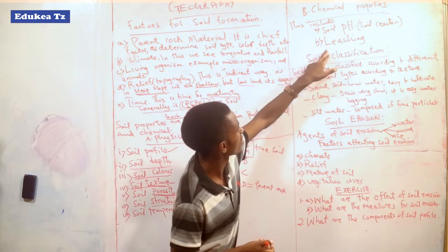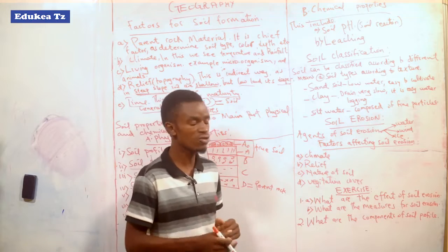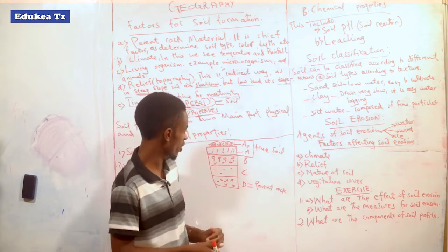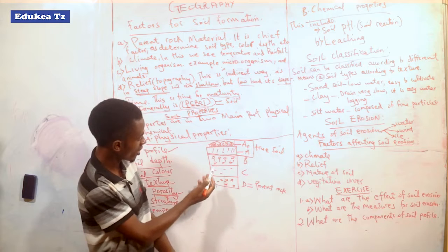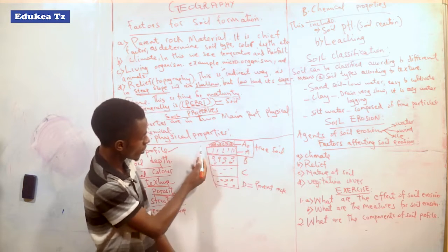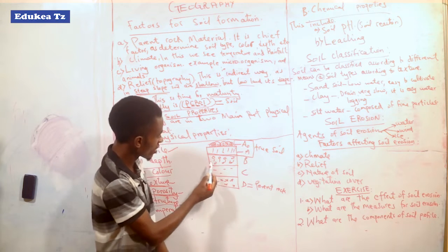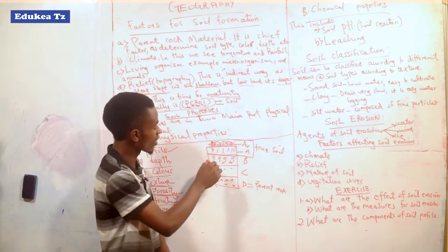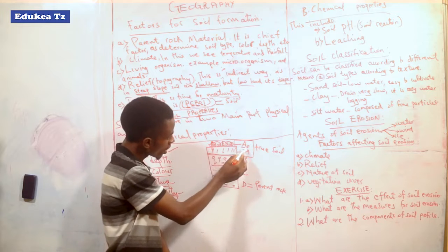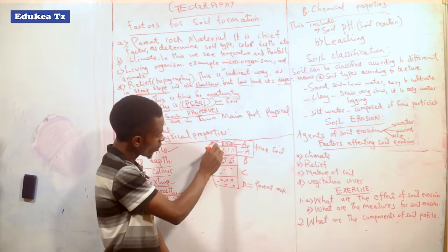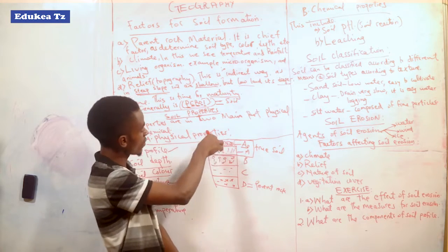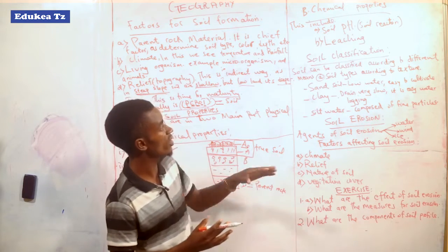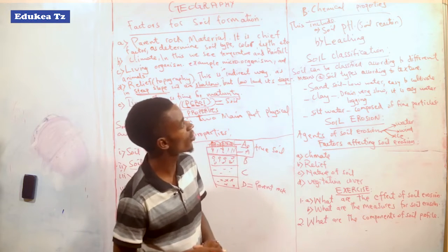The second chemical property is leaching. Leaching is the process of transferring nutrients from the topmost layer towards other layers of the soil. Looking back at the soil profile diagram, leaching means transferring nutrients from the topmost layer — horizon A-O — into other horizons, such as horizon B, C, and D. The process of transferring nutrients in solution form from one point to another within the soil is called leaching, and it is among the chemical properties.